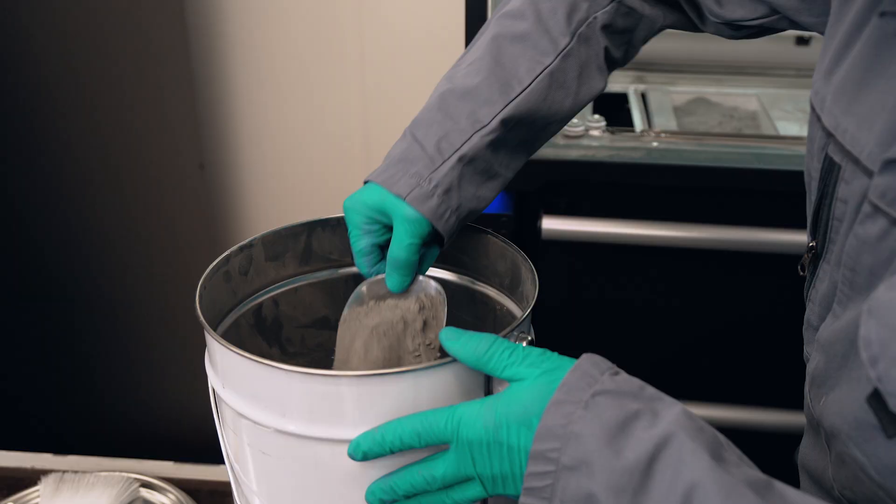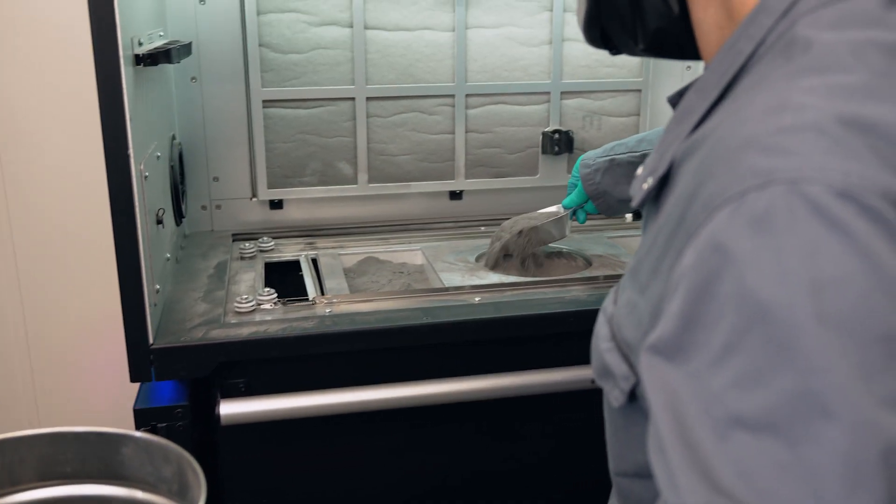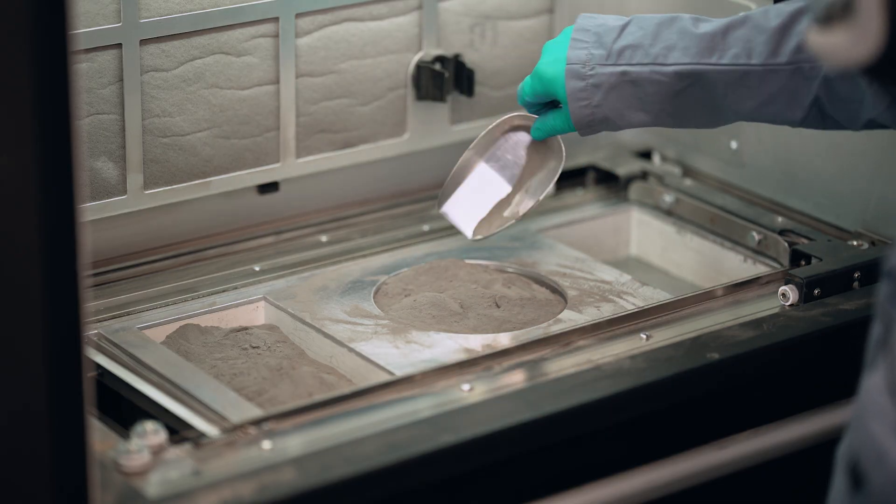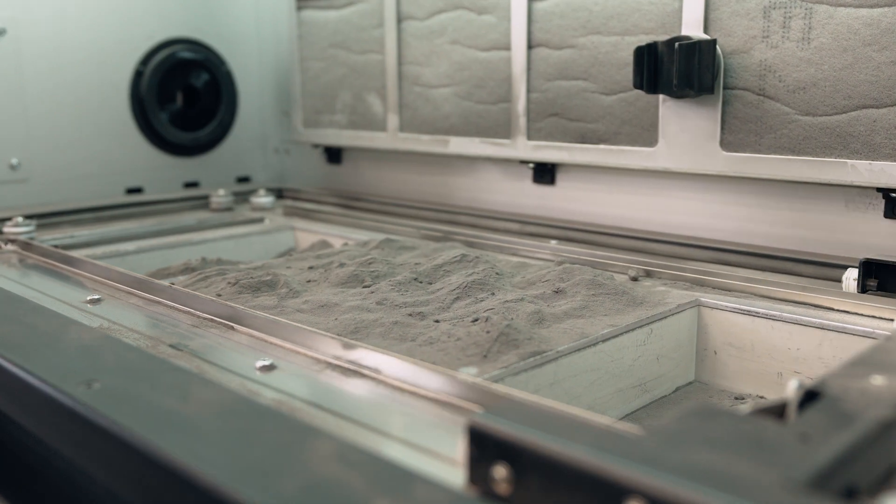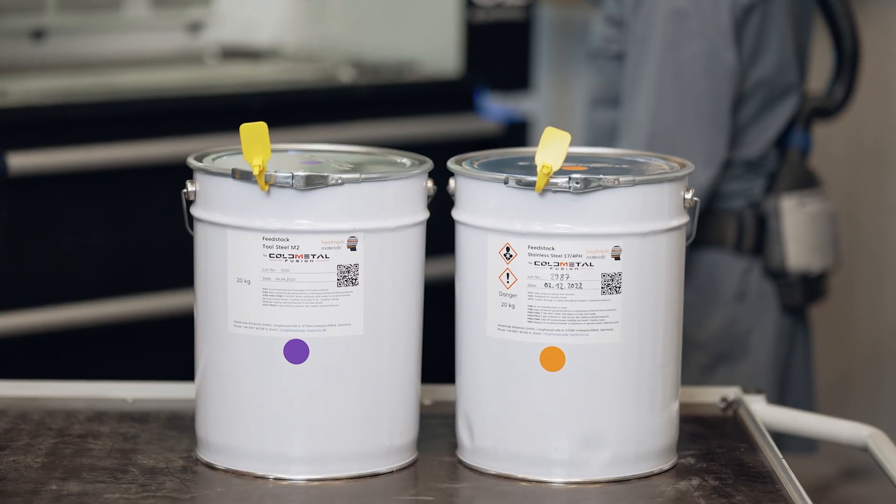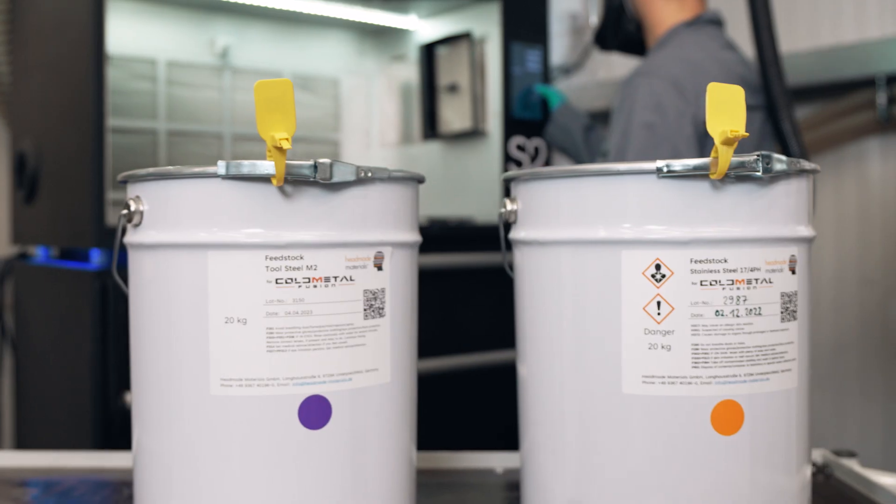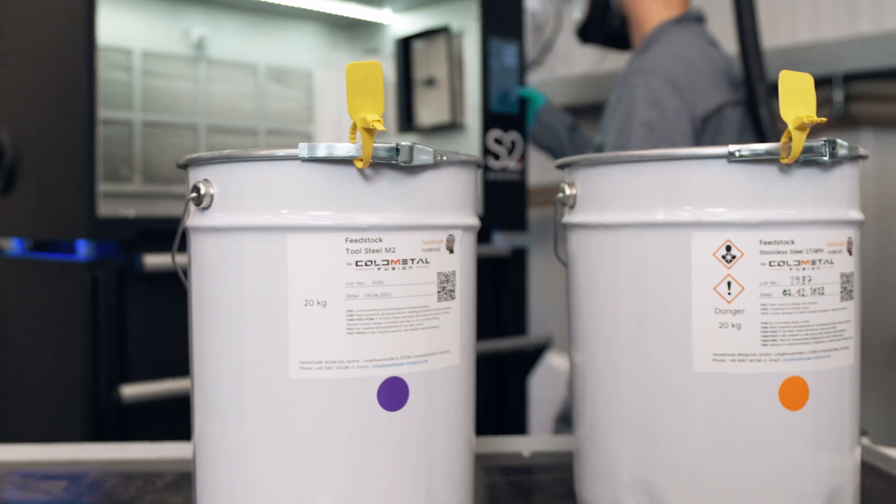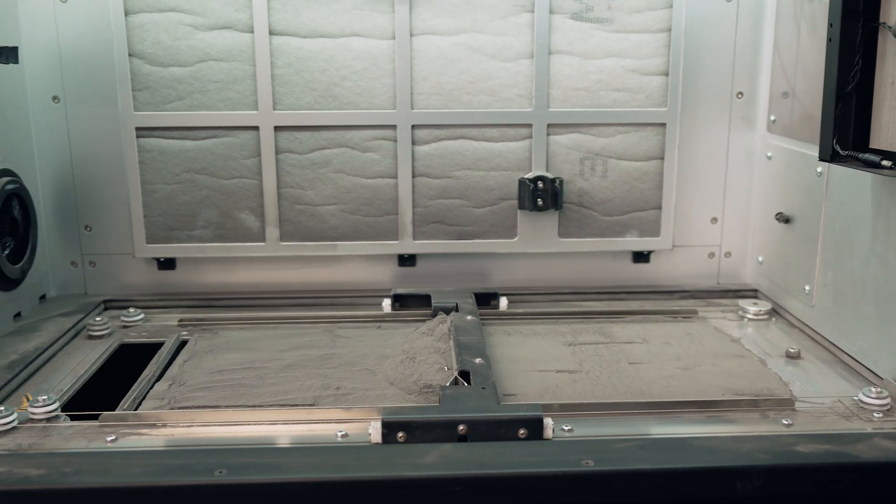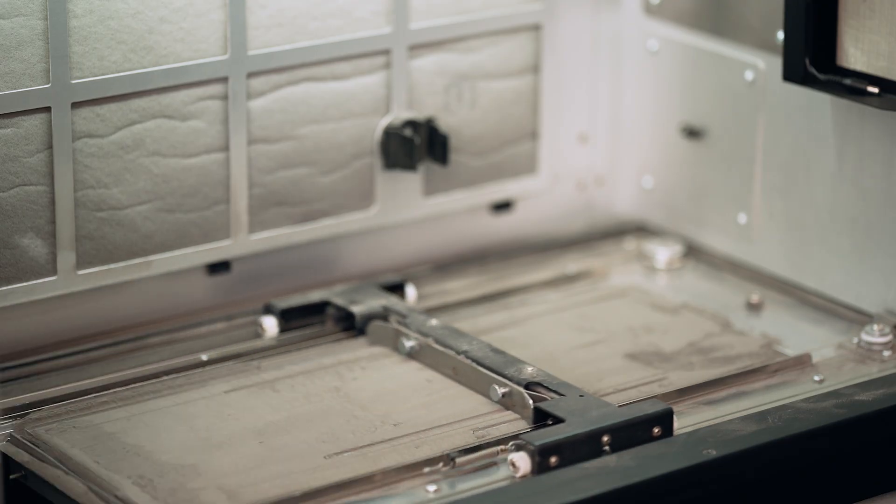After you're done preparing the build job you go over to the build module and fill it up with HeadMate's material. On the Cold Metal Fusion lab system today you can print 17-4PH stainless steel and the M2 tool steel. In this case today we will be using our 17-4PH material.